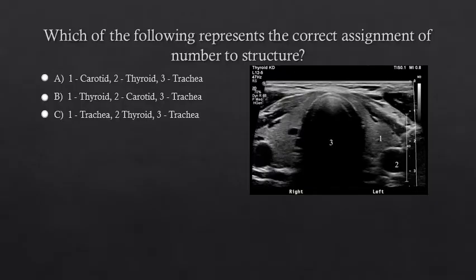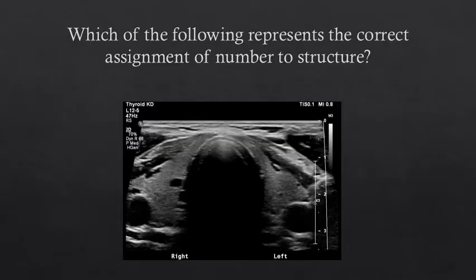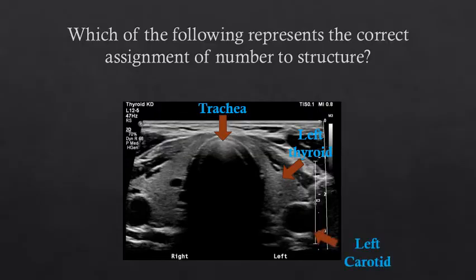Now take a moment to look at this image. Orient yourself to the various structures on the image and decide which answer correctly assigns the number to the structure. In this case, B is the correct answer. We can see on this image the thyroid represented to the left of midline from the trachea, and somewhat deep and lateral to the left lobe of the thyroid we see the left carotid artery.